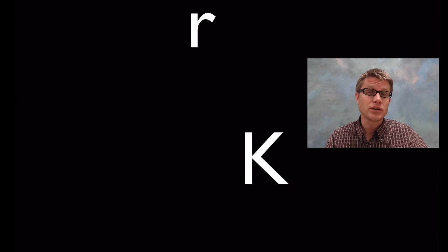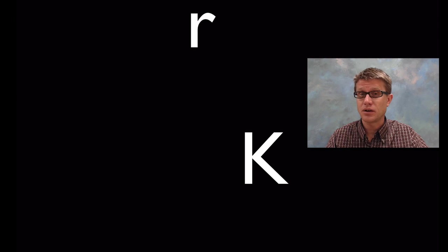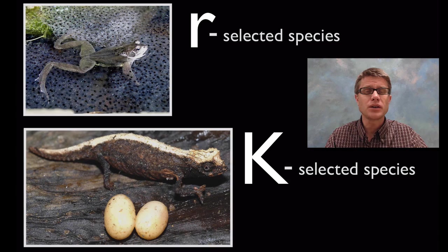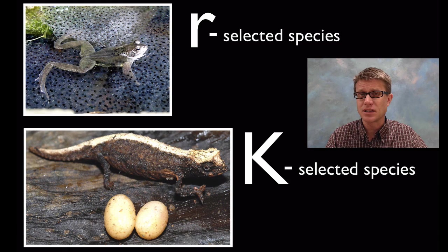And so again in review, what's r? R is going to be the growth rate. What's K? K is going to be the carrying capacity. So if our r is ever greater than 0, we're going to show exponential growth. And if we ever have K, if we ever have a carrying capacity, we're going to show logistic growth. But we also have species that specialize in these two. We've got r selected species and K selected species.